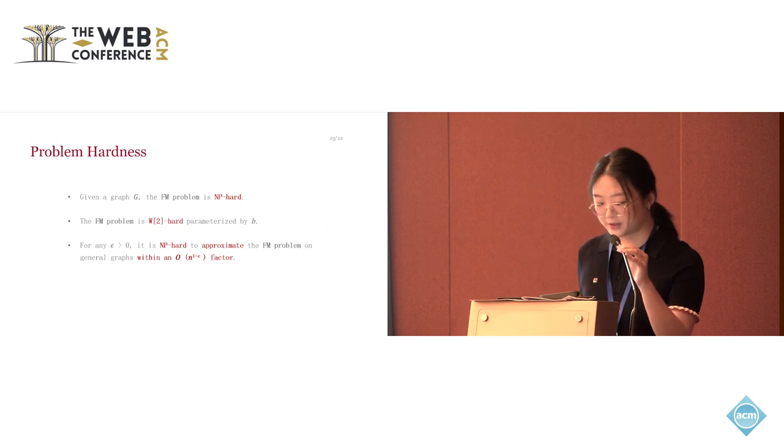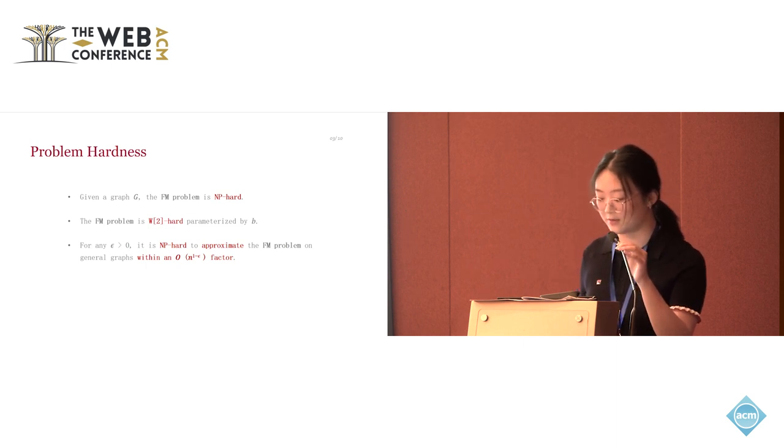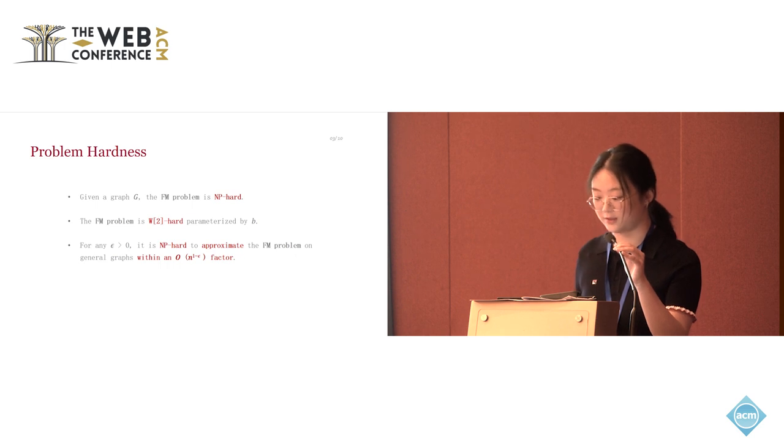To theoretically analyze the hardness of the problem, we present three key findings. First, given a graph G, the FM problem is NP-hard. Second, the FM problem is W2-hard parameterized by budget B. And third, for any epsilon greater than zero, it is NP-hard to approximate the FM problem on general graphs within a certain factor.